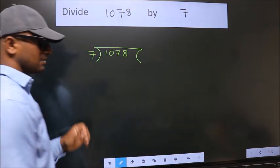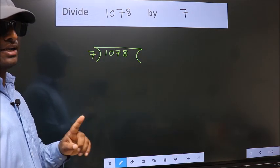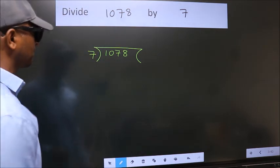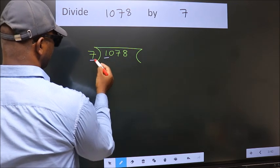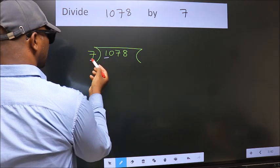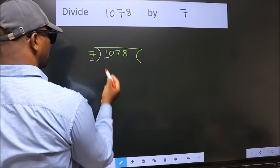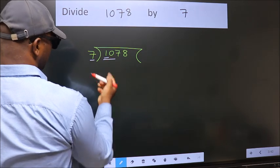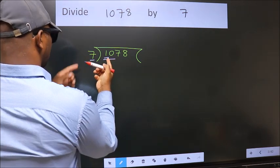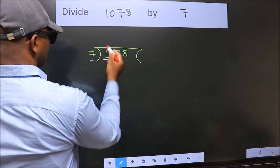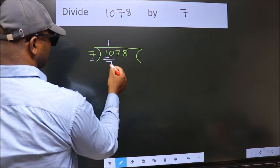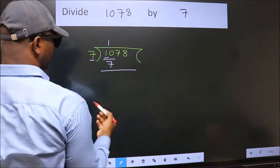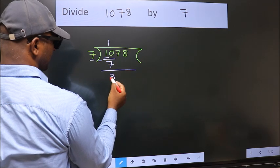This is your step 1. Next, here we have 1, here 7. 1 is smaller than 7, so we should take two numbers, 10. A number close to 10 in the 7 table is 7 once 7. Now we should subtract. We get 3.